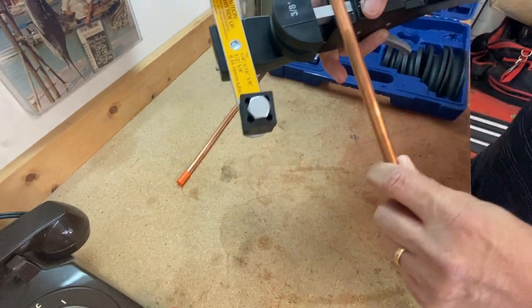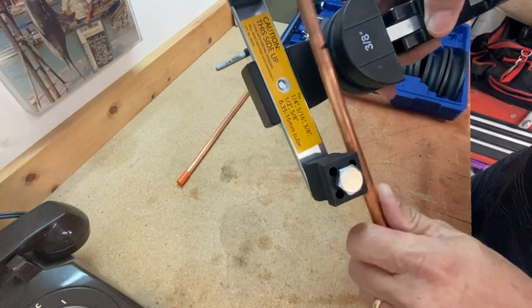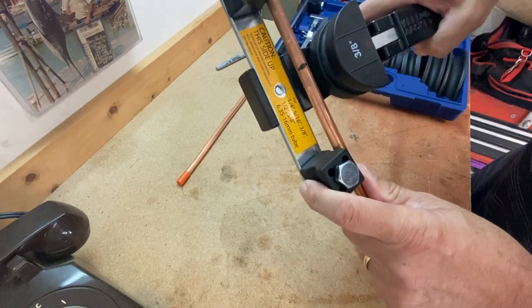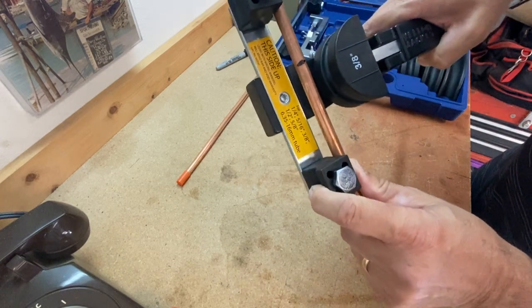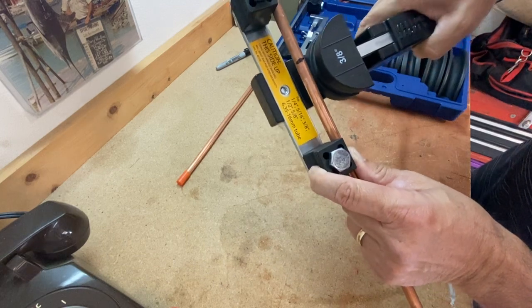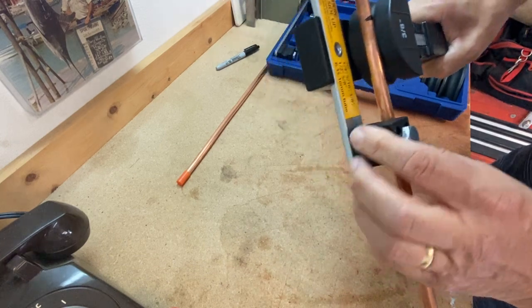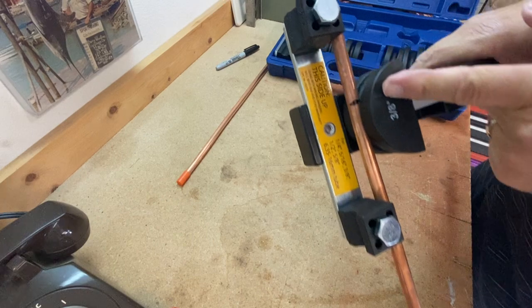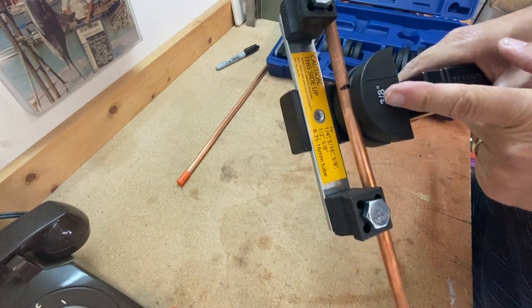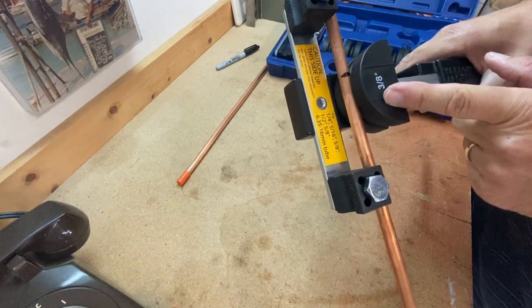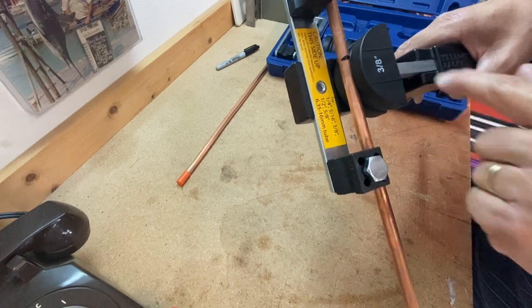I line up the mark I put on my tubing with the right side. So I want the top of my bend to be lined up with the index mark. If I wanted the bend to be at the bottom, I would put it at the other index.